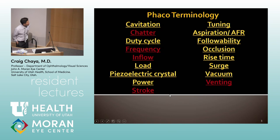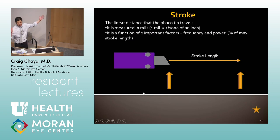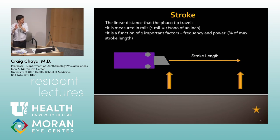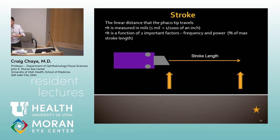Stroke is the distance that the tip is traveling — the entire distance set on your machine. You guys don't change the stroke length; what you change is duty cycle — the time on — and you change the power. When you have a hard, dense piece it makes sense to use a longer stroke length to break up the pieces, creating more heat and energy.